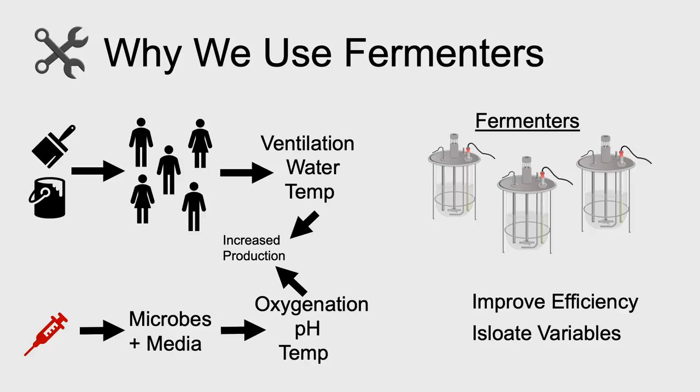We also want to isolate variables in the fermenter. Maybe we think that a little bit of a change in pH can increase production. We want to isolate that variable and only have the pH change. All of these things will work together in a fermenter and allow us to assess if we're actually going to be able to produce a molecule of interest for a viable price. So let's step into the lab. We're going to build a fermenter from the ground up piece by piece.